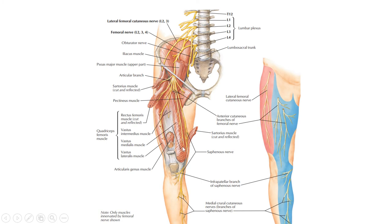The femoral nerve arises from the lumbar plexus, passes behind the inguinal ligament, and gives multiple branches supplying muscles of the anterior compartment. It then gives a nerve called the saphenous nerve, which is mainly cutaneous but also provides an infrapatellar branch that supplies the knee joint.